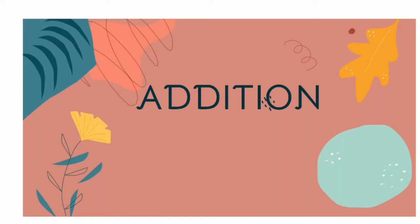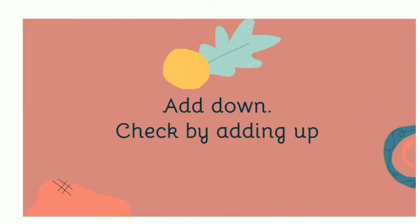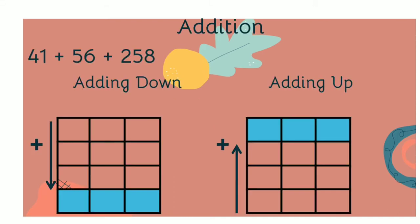Today we are going to see the chart. Add down, check by adding up. First you take it and write the number in this box. All of them understood how you take it and write. You start from one place and you write.